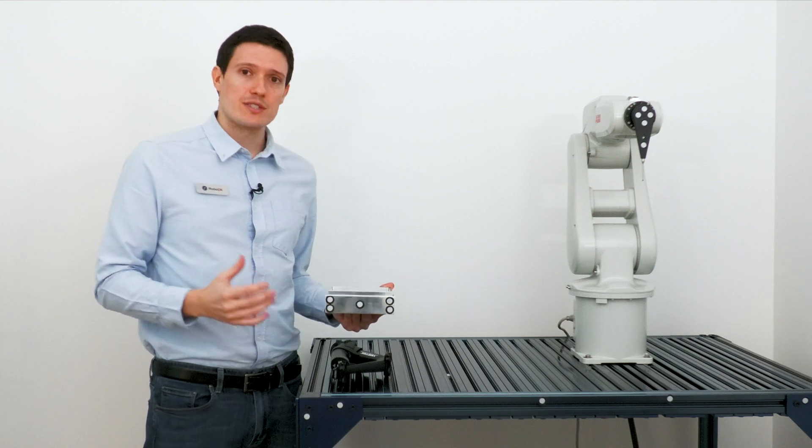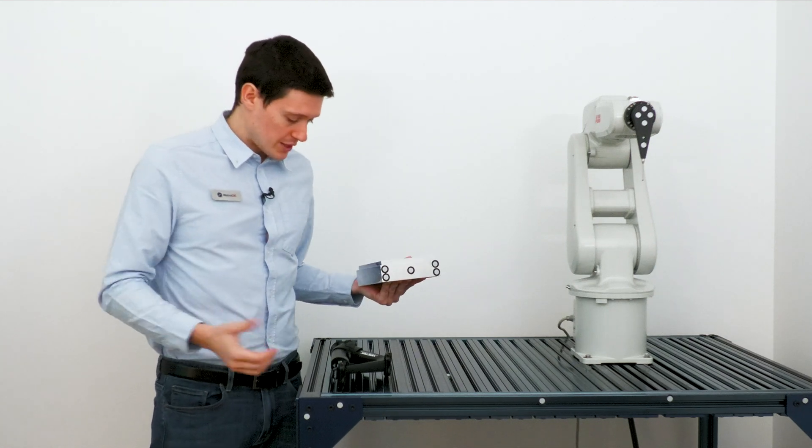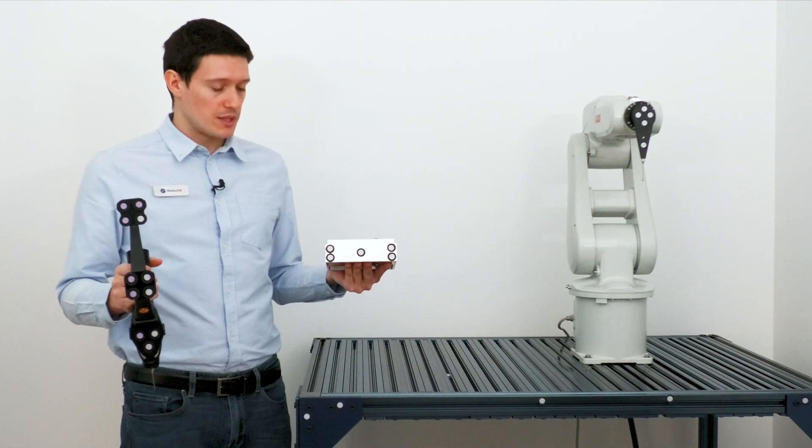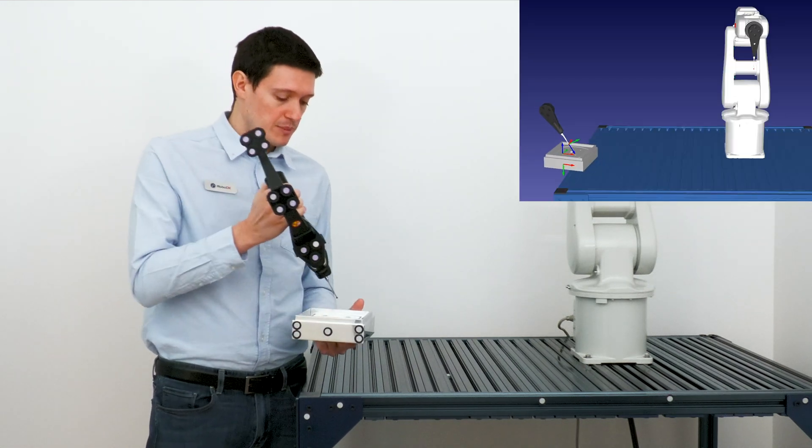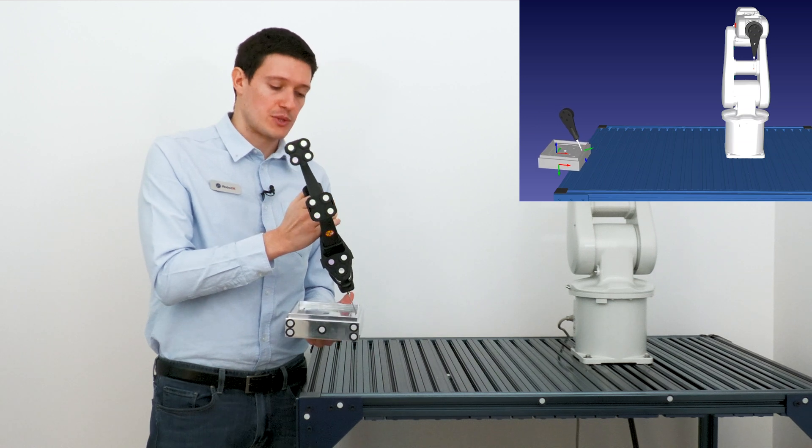The procedure is the same as if the object was static. We can just grab the probe, make sure the probe is visible and the part is visible at all times, and press and hold the first button of the probe.